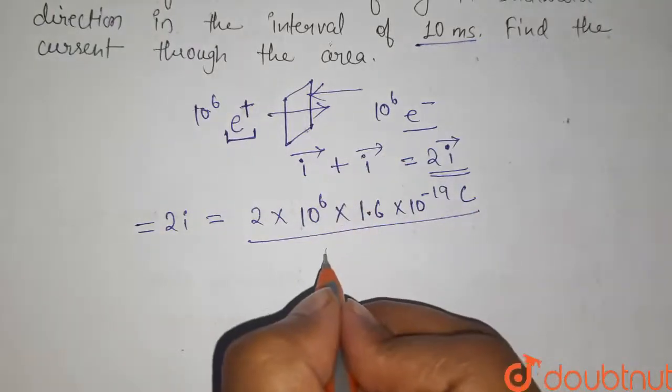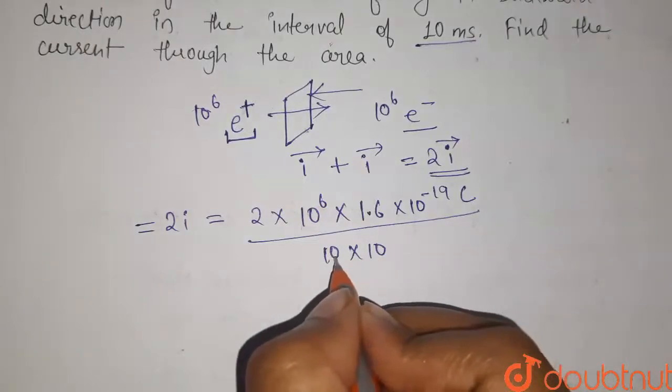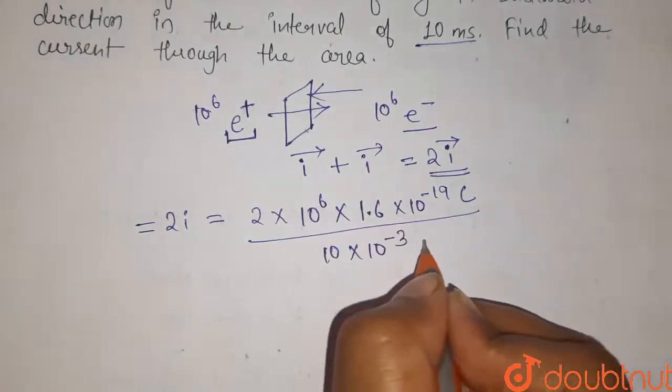So it is given here that it is 10 milliseconds. Let us convert it into SI units. So it will be 10 × 10^-3 seconds.